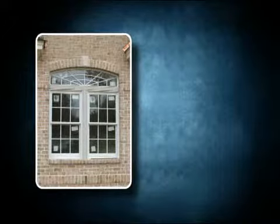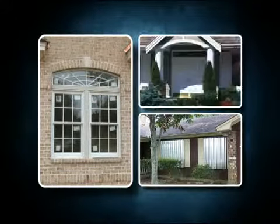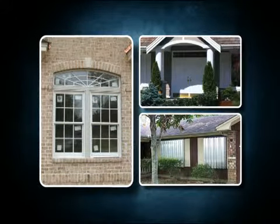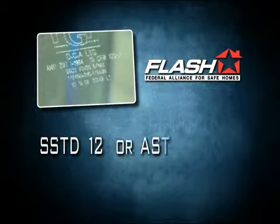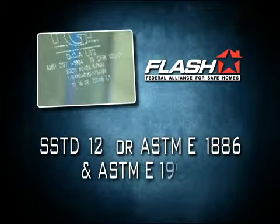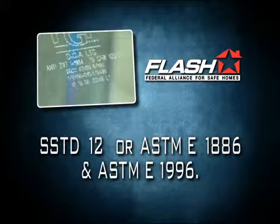Impact resistant windows, shutters, and doors should have proof of compliance identified on a sticker or label, or be imprinted into the product. Code approved products will be tested and approved using SSTD 12 or ASTME 1886 and ASTME 1996.